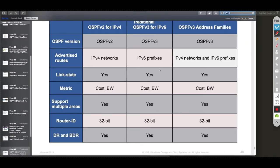A couple of things to note here. Number one, OSPF version 3 is an IPv6-centric routing protocol. It was developed with the same features and functionality as OSPF version 2, which we configured in previous videos. Because OSPF version 2 did not support IPv6, OSPF version 3 was born. OSPF version 3 can support the synchronization of both IPv4 and IPv6 databases.